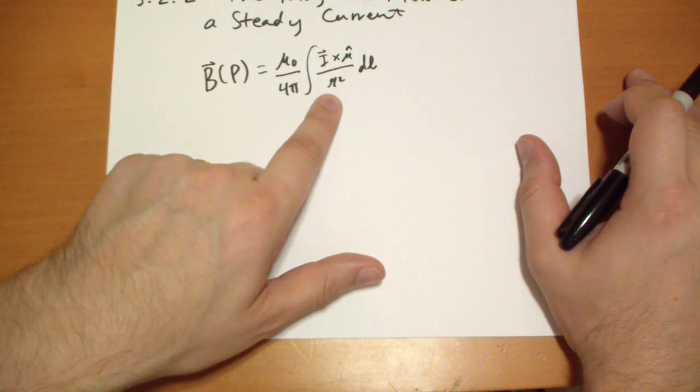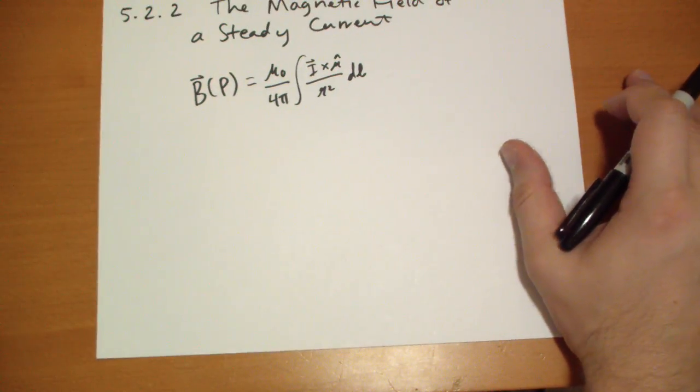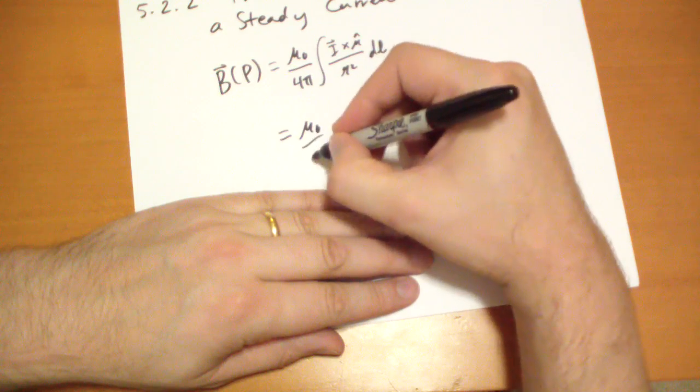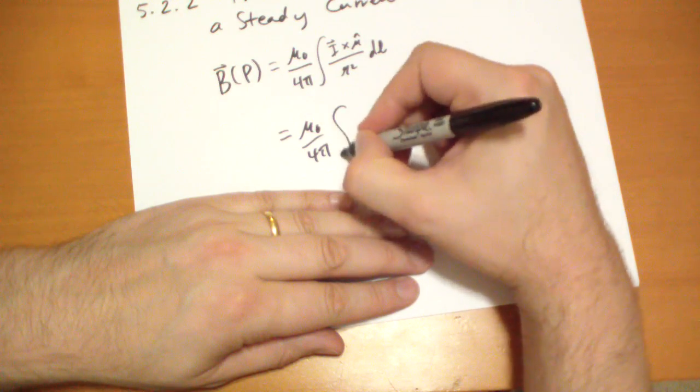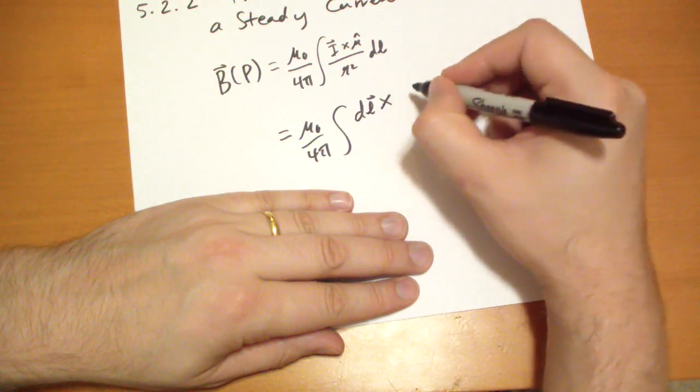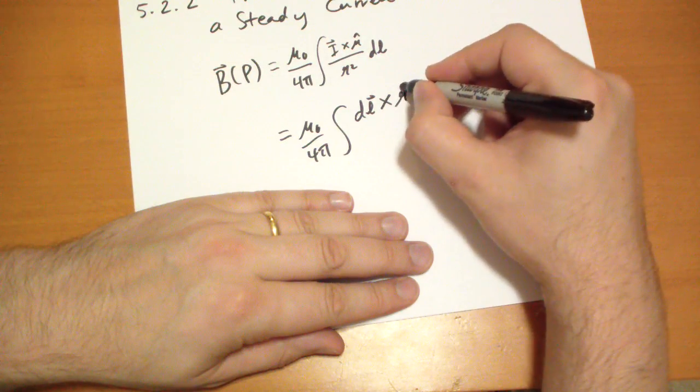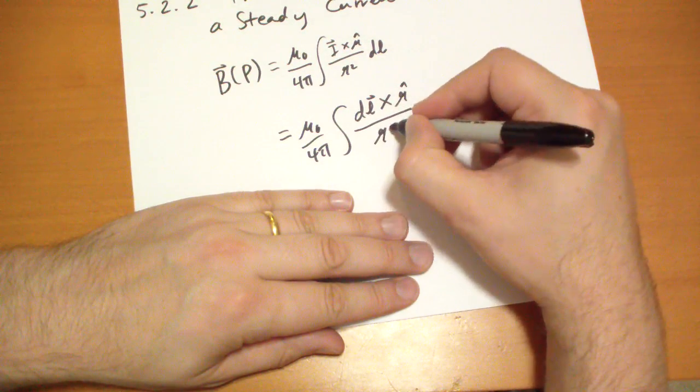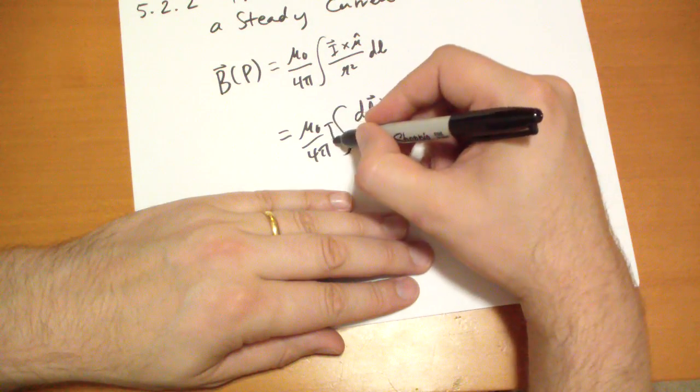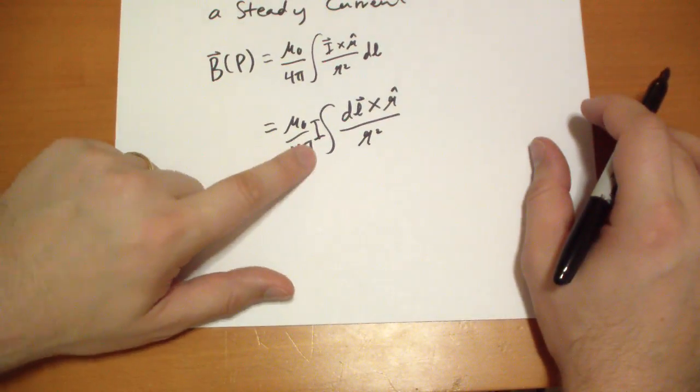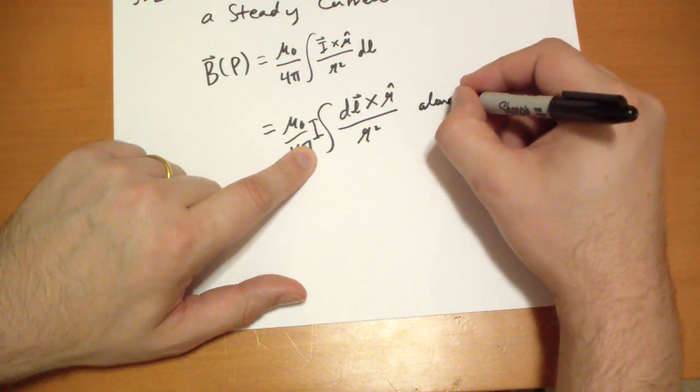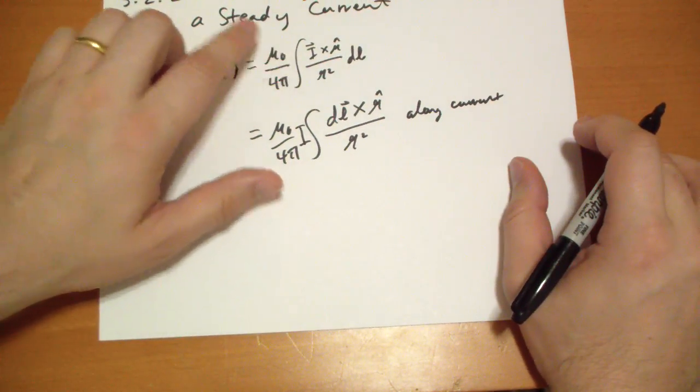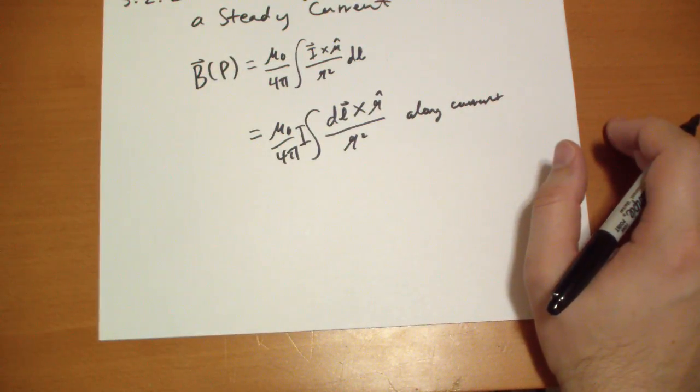You can also write it out in this different form: mu0 over 4pi integral of dl vector cross r-hat, all over r-curly-squared. And where did the i go? It goes out here. This is when you're traveling along the current. And this is traveling along some line that may or may not be aligned with the current.